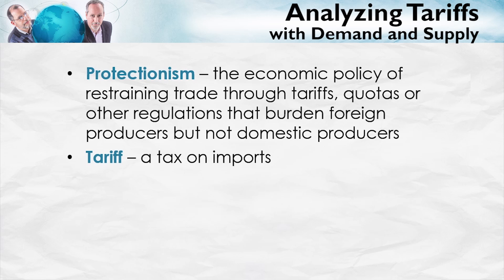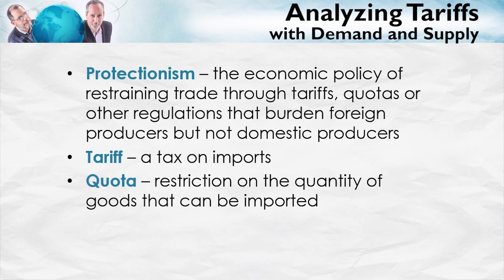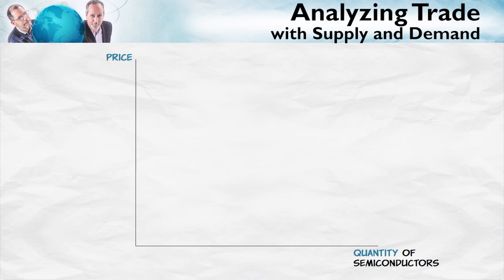A tariff is simply a tax on imports. And a quota is a quantity restriction on imports. For example, a quota may say you're only allowed to import 10,000 automobiles from Japan.